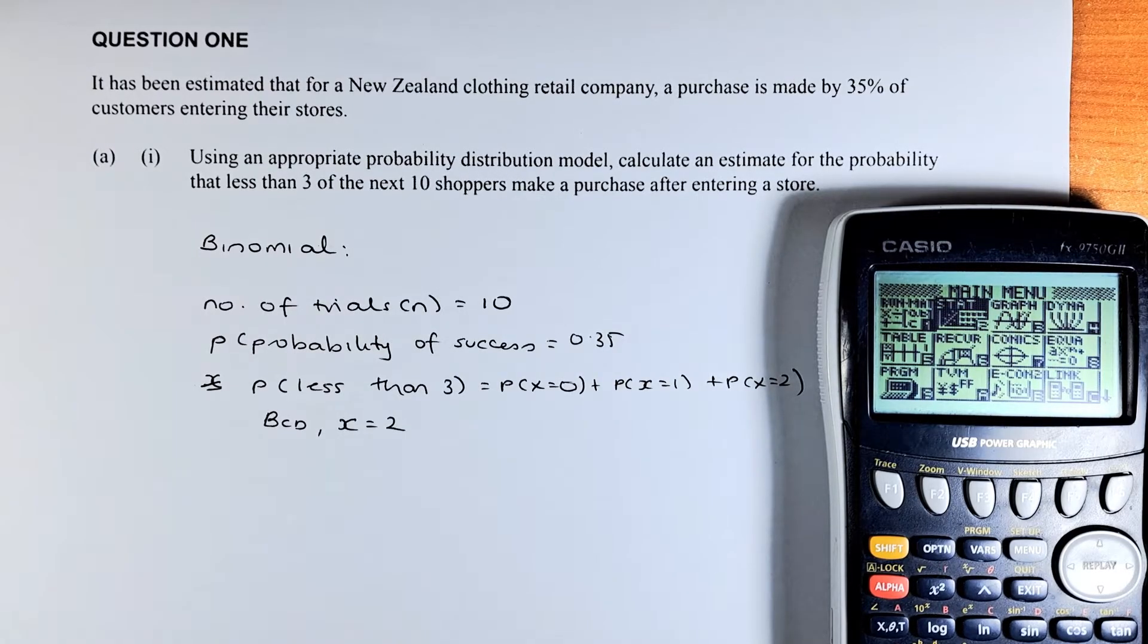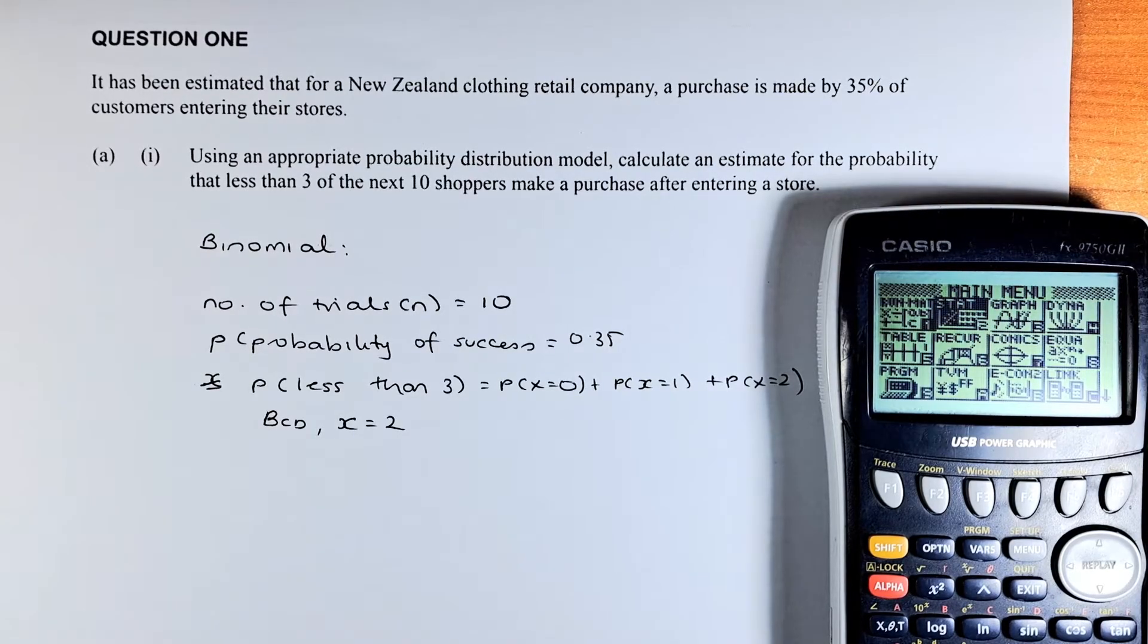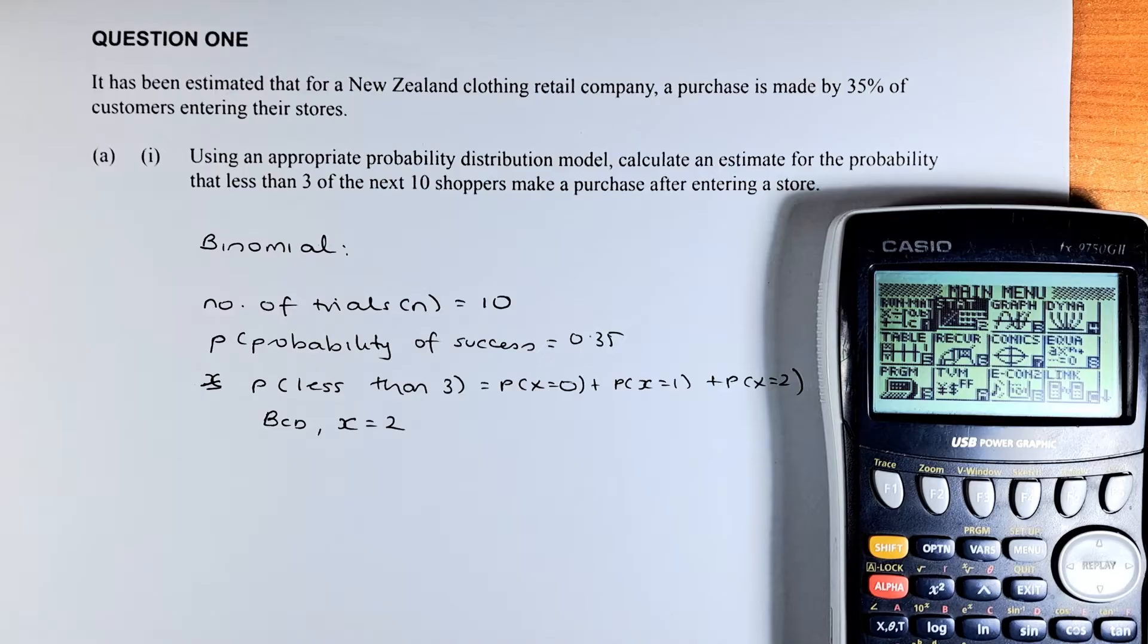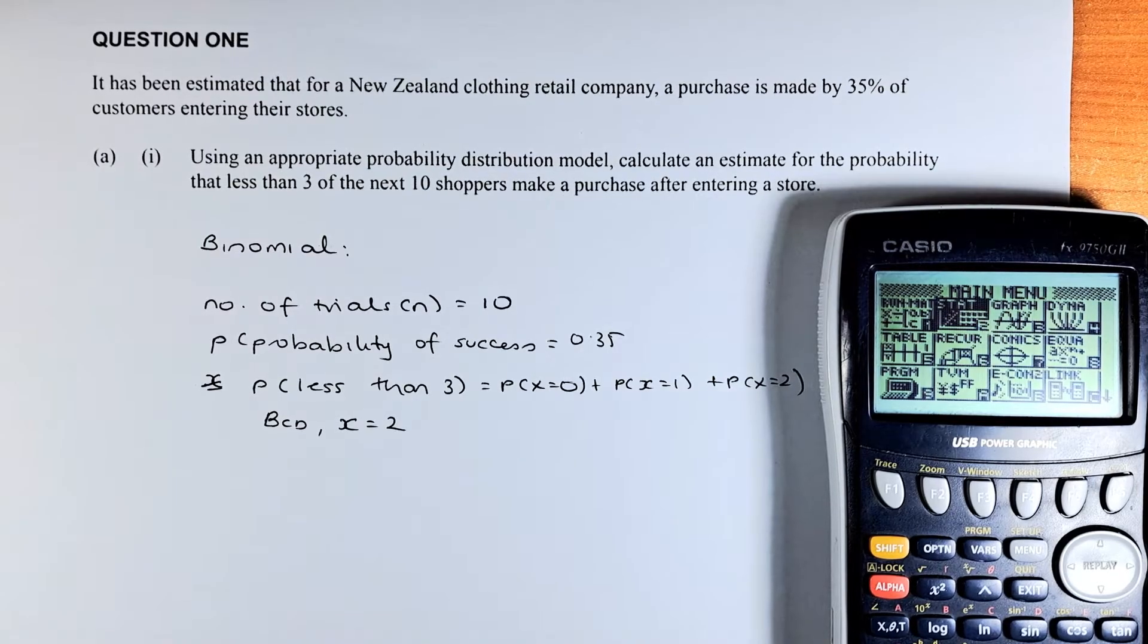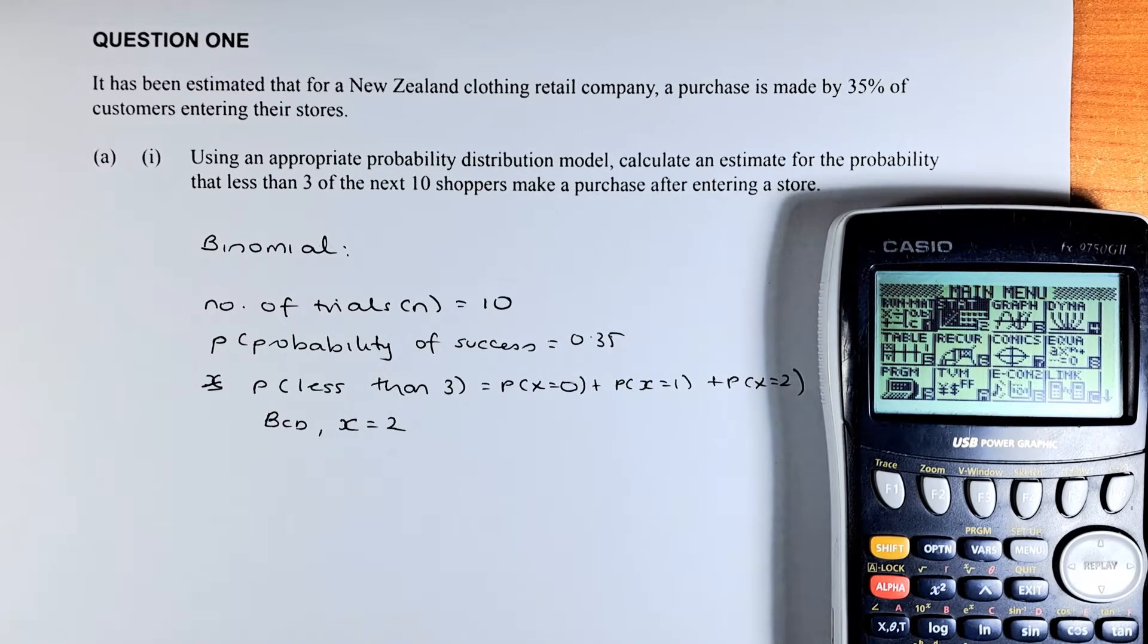It is a binomial because you have a fixed number of trials, there are a total of 10 shoppers. And then you calculate the probability of X which is 3, and you have the probability of success which is 0.35. Once we know it is a binomial, we are going to use the graphic calculator and try to solve this.